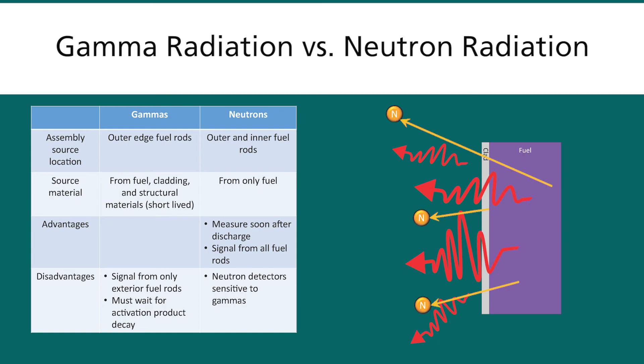Also neutrons have the advantage that the signal is from all the fuel rods. It is from the central fuel rods, it is from the outer fuel rods. The gamma radiation is just from the outer fuel rods.